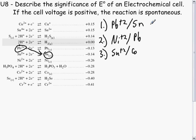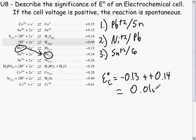But to check, E-naught for the cell equals E-naught for the reduction, negative 0.13, minus the E-naught for the oxidation, which is negative 0.14, which equals 0.01 volts.